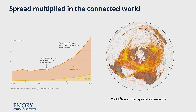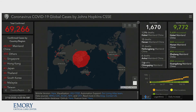In our connected world, there's much greater opportunity to spread. When SARS broke out, there were about a billion airline travelers; passenger traffic has increased by a factor of four over the past two decades. This is the current worldwide air transportation map, and as we've learned, this virus can wander onto airplanes and into populations at will. Data pulled from Johns Hopkins this morning showed just under 70,000 total confirmed cases and about 1,670 total deaths — though that depends on the veracity of data coming out of China. By far the greatest concentration of infection remains in China.